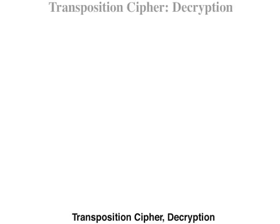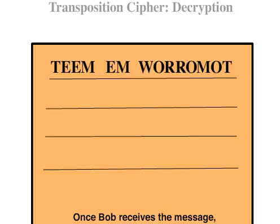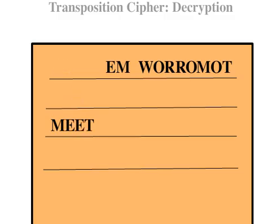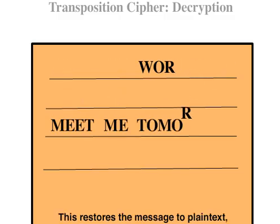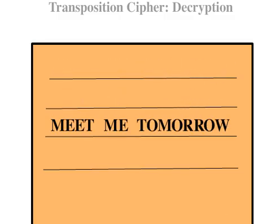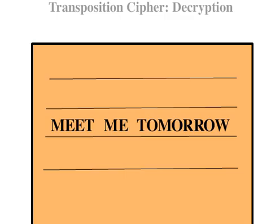Transposition cipher decryption. Once Bob receives the message, Bob then decrypts the cipher text. This restores the message to plain text: 'meet me tomorrow.'